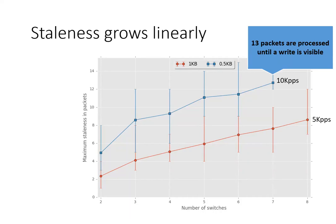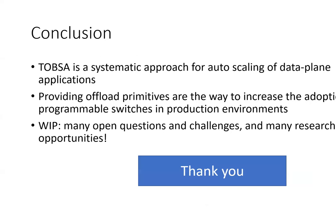Intuitively, going back to our adaptive routing example, if we detect 10k elephant flows every second, then we will send at most 13 mice flow packets using the wrong routing policy. To conclude, we presented the concept of TOPSON, a systematic approach for autoscaling data plane applications. Although TOPSON is in the early stages and there are many open challenges to tackle, we believe that providing offload primitives rather than hard-coded data plane applications is the way to increase the adoption of programmable switches in production environments. Thank you very much.